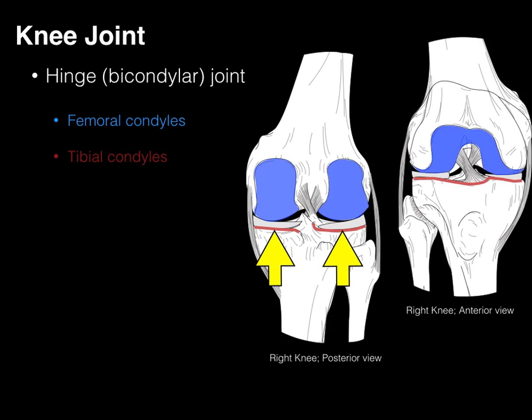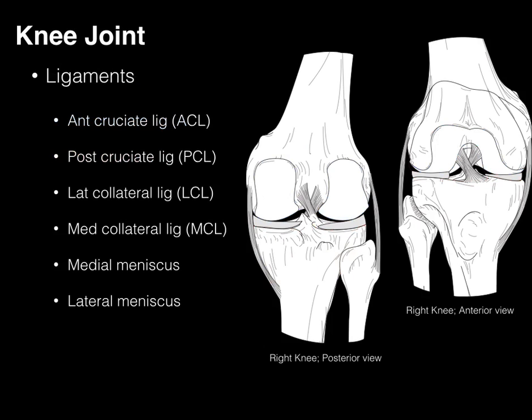This means bending in only one plane, but we'll see that it also gives some rotational movements, hence the term bicondylar joint.